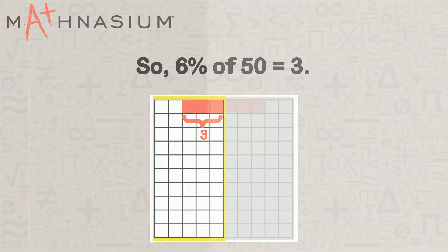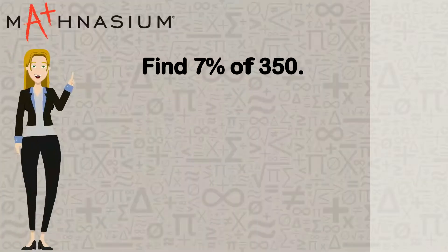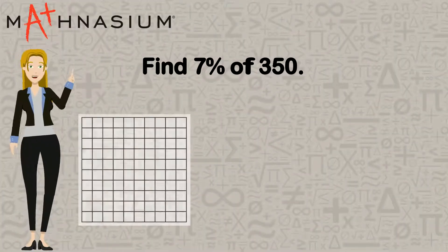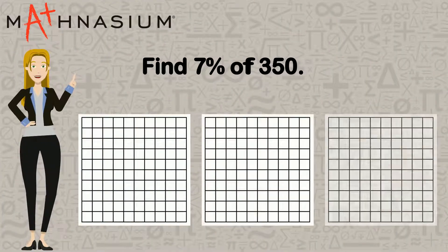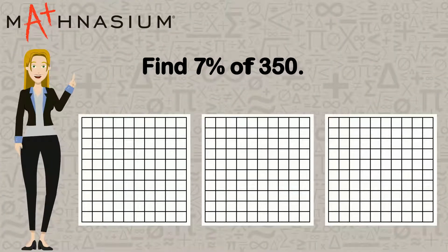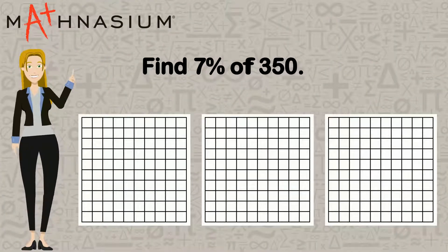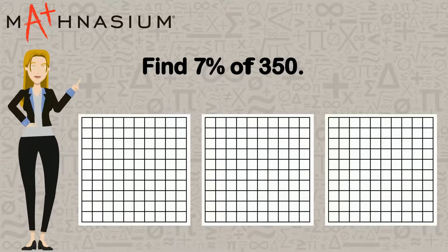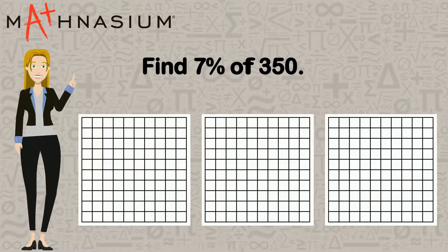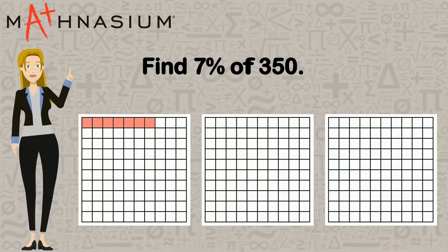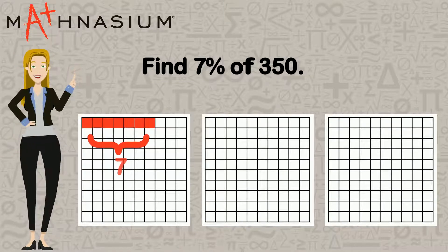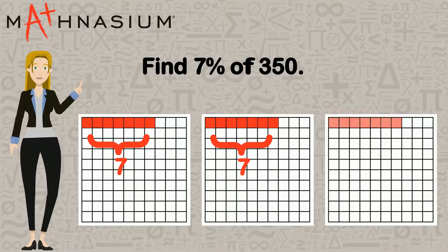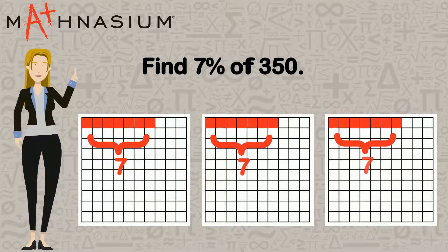Let's try another problem: find 7% of 350. First we'll take 7 for each 100. Here there are three hundreds, so we'll take 7 for the first 100, plus 7 for the second 100, plus 7 for the third 100.